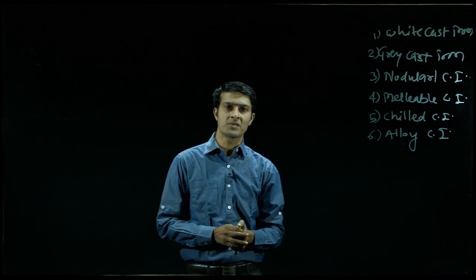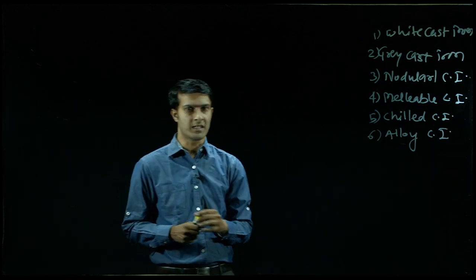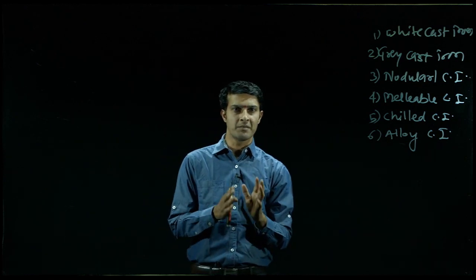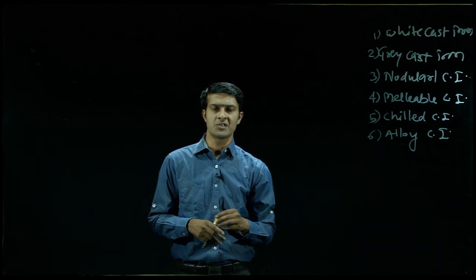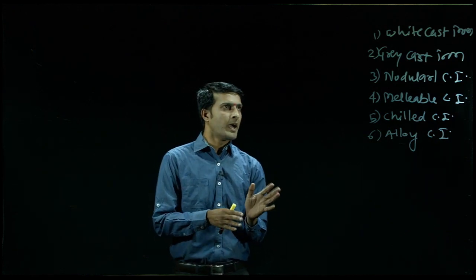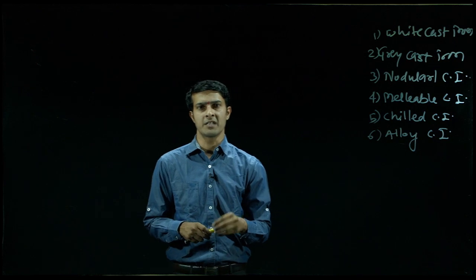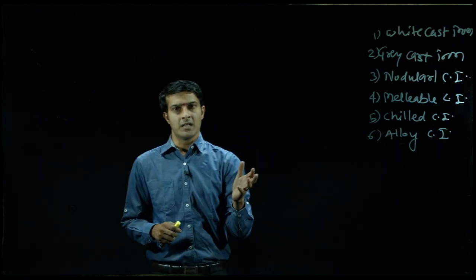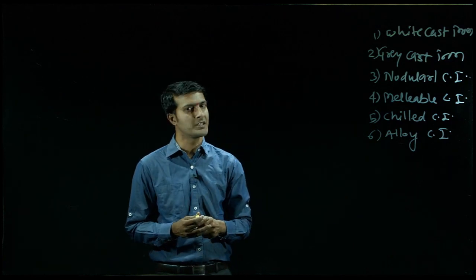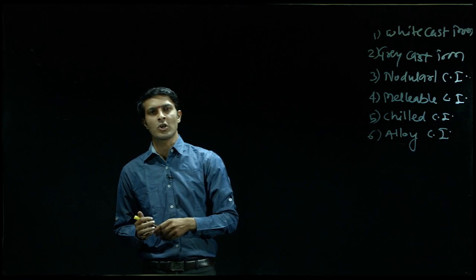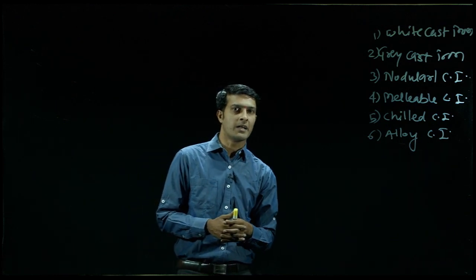White cast irons are the basic forms of cast iron. When we break the component of white cast iron, it appears white in color. The fracture appears white because all the carbon present in white cast iron is in combined form, that is in cementite form. These cast irons are very hard, producing near about 350 to 500 BHN hardness. They cannot be machined by normal machining processes, so the final shape is finished by grinding. These cast irons are normally used for liners, covers, road roller surfaces, etc., due to their high hardness properties.